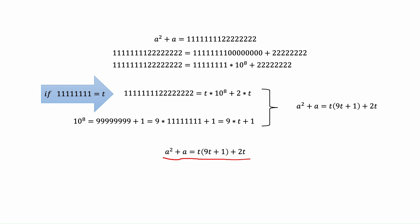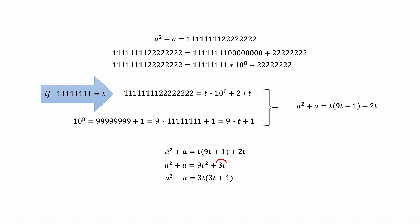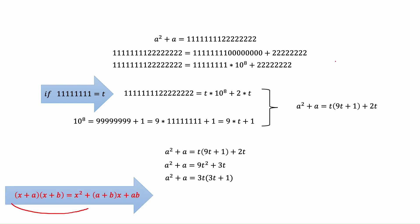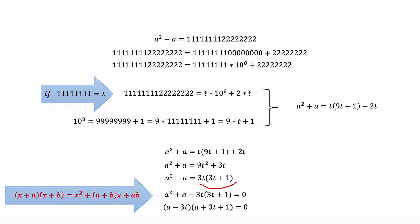Now we want to solve this new equation and find a in terms of t. Multiplying t through these terms, we get nine t squared plus three t. We can see we have 3t in both parts, so we can factor 3t out, giving us 3t times (3t plus one). This is a well-known algebraic form. Moving the right-hand side to the left side gives us negative 3t times (3t plus one), plus a squared plus a, all equal to zero.